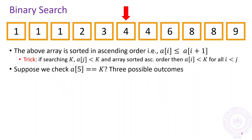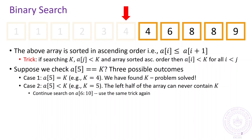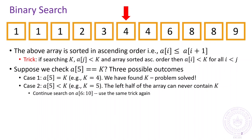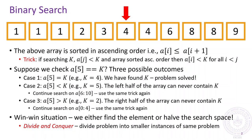To take an example, suppose we check if the element at index 5 is equal to k or not. There are three possible outcomes to this check. Either the element is equal to k, in which case we have found the key and we are done. Or else the element is smaller than k, in which case we are assured that no location to the left could ever contain k since all of them would be smaller than k. The third case is that the element is larger than k, in which case we are assured that no location to the right could ever contain k since all of them would be larger than k. This trick allows us to shrink the search space significantly and we can continue using this trick on the remainder of the array, which is a win-win situation.